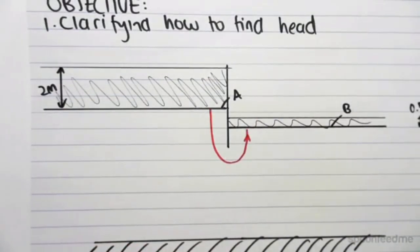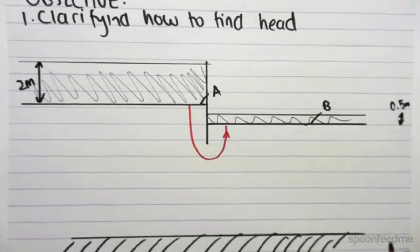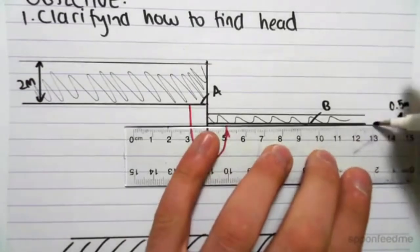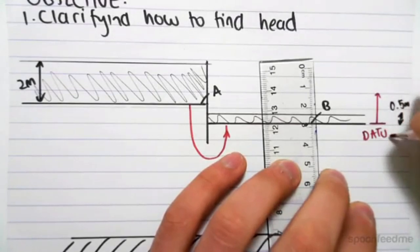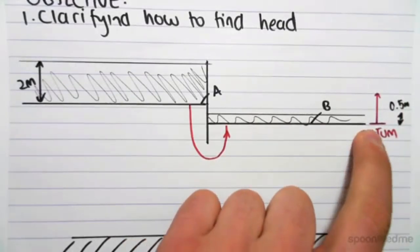So that's just a small clarification. But we're going to now clarify how we find head because it can be quite confusing. So the first thing we need to do as always is define a datum. So we're going to put our datum down here. It doesn't matter where you put your datum, we just need to put it in a convenient spot, which is down here for us.